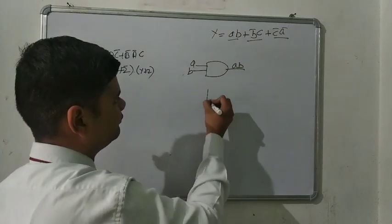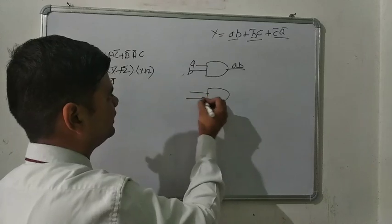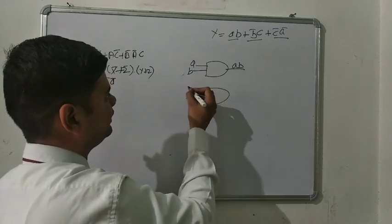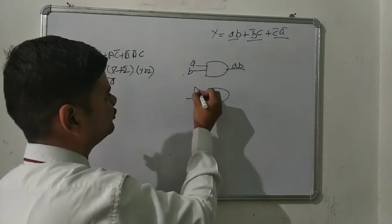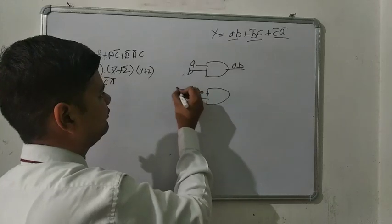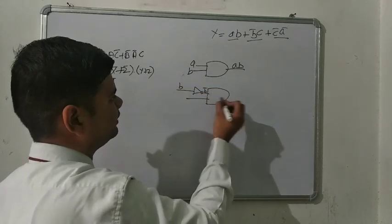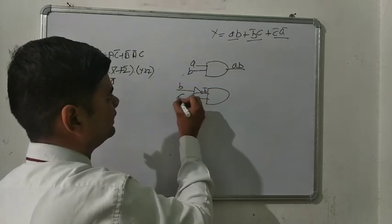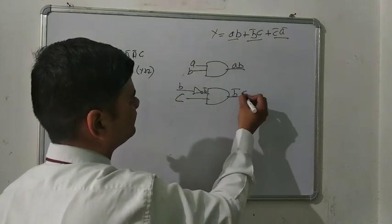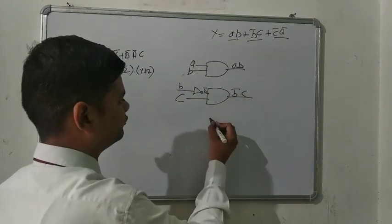For the second term B̄C, again we draw the AND gate. For B we use the NOT operator — B is the input and it converts into B̄. Then C is direct. The final output is B̄C.